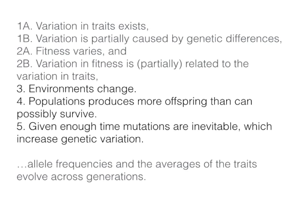Condition four: when populations produce more offspring than can possibly survive. Pretty much all species have the capability of doing this — it's a feature of mathematics that if organisms reproduce, they multiply. If you take 2 elephants and make 4, those 4 make 8, those 8 make 16, and pretty soon you've got more elephants than can possibly survive. That doesn't mean populations always do produce more than can survive — they don't, because they don't have unlimited resources.